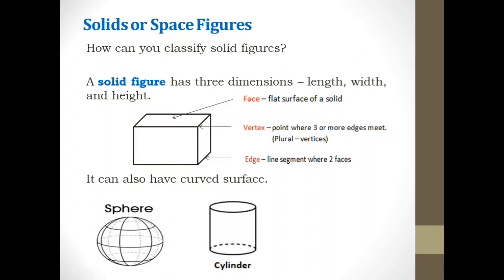Another curved surface solid figure is a cylinder. Examples of cylinder are the tin cans, candles, toilet paper rolls, cups, aerosol cans, and some flower vases.